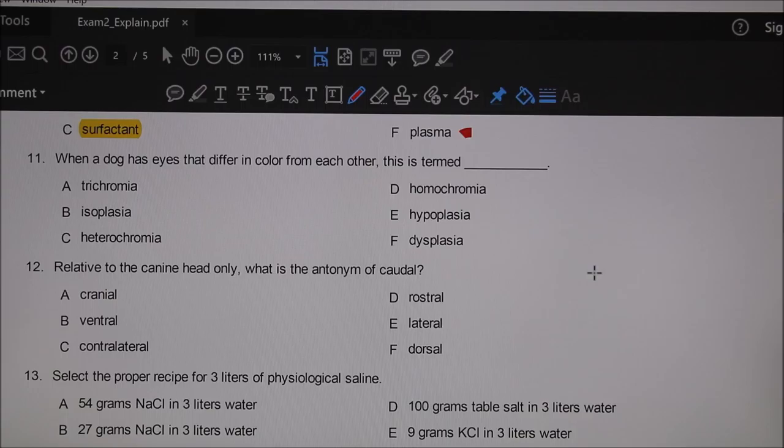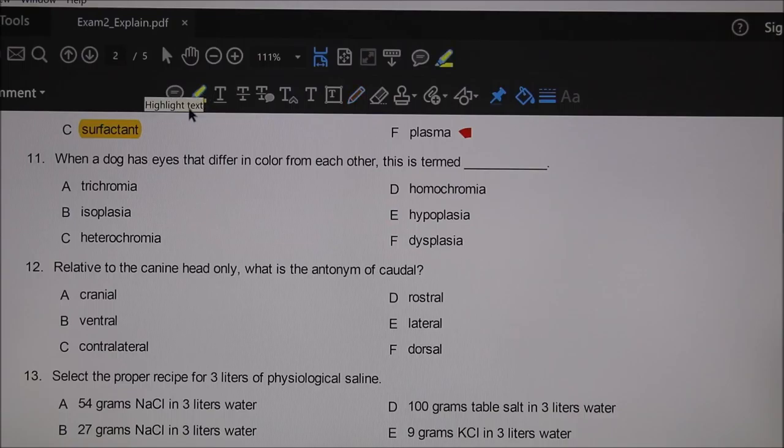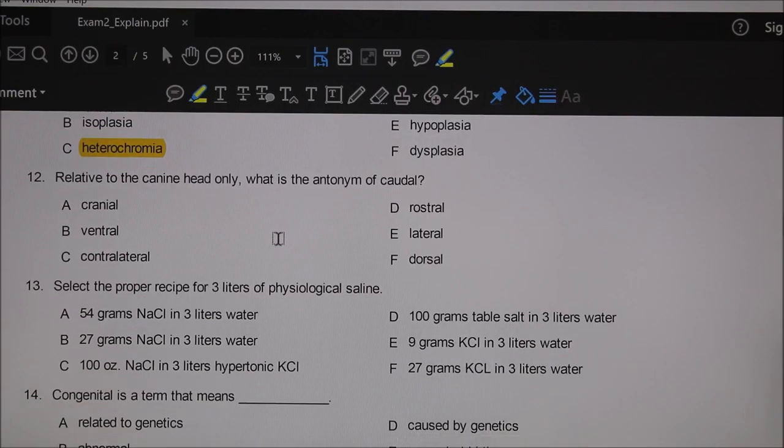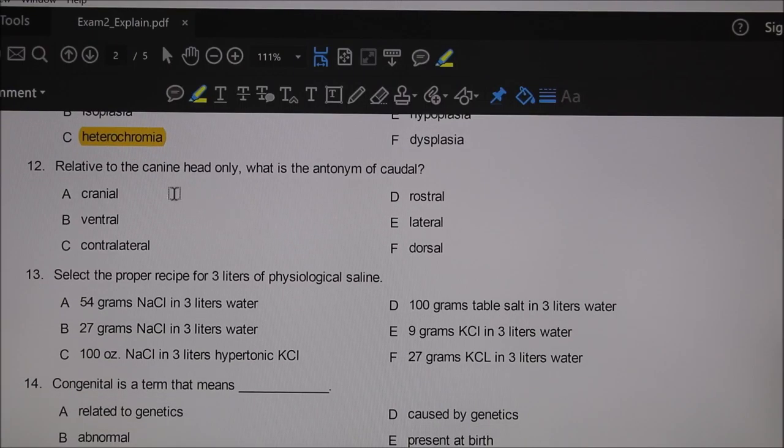Question 11 refers to a dog we had in class. When a dog has eyes that differ in color from each other—the left eye is different color than the right—the iris of course, this is termed heterochromia. Hetero is a prefix meaning different, and chromia means color.